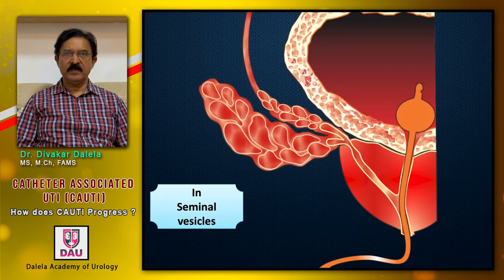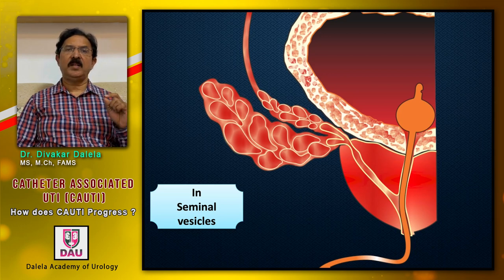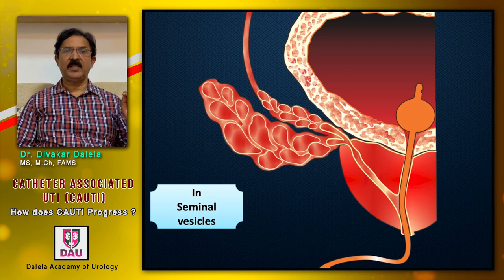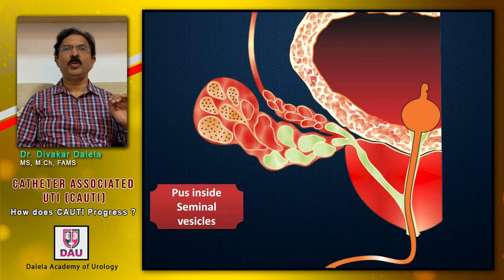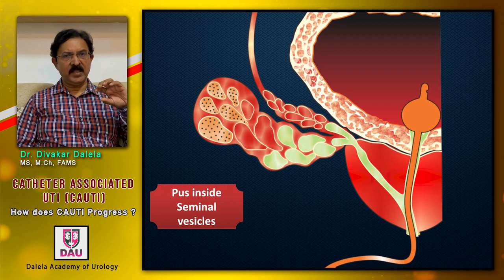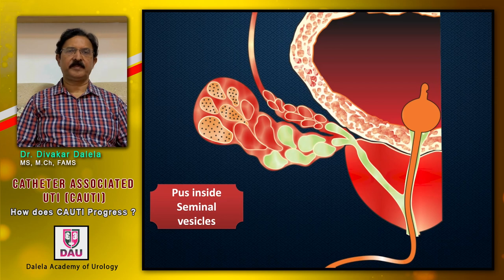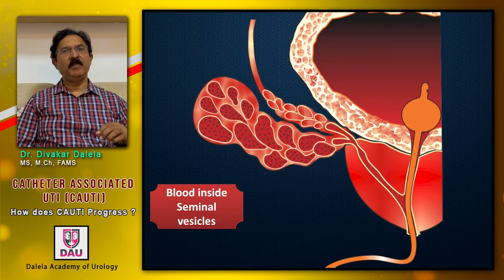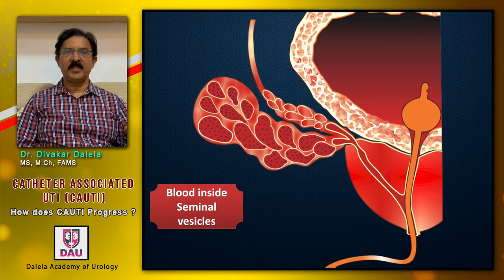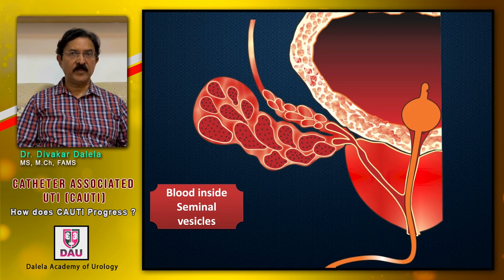In the seminal vesicles, the catheter lying in the prostatic urethra has its shaft blocking the ejaculatory ducts. This is why drainage of the seminal vesicles gets impeded. In this impeded drainage, bacteria can grow, and the collection inside the seminal vesicle becomes purulent — what is known as pyospermia. In other patients there can be bleeding from the mucosal wall of the seminal vesicle, which is what is meant by hematospermia. This is one consequence of having a catheter in the prostatic urethra.